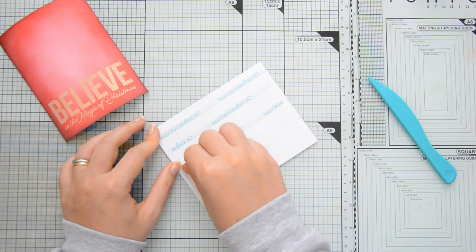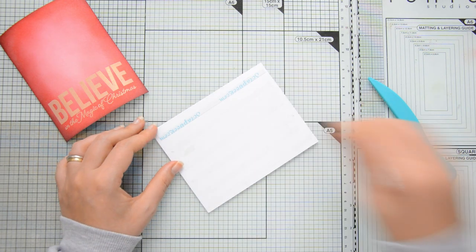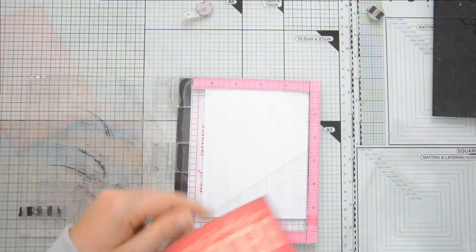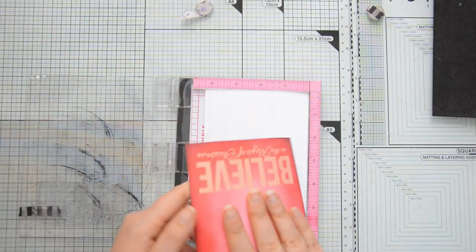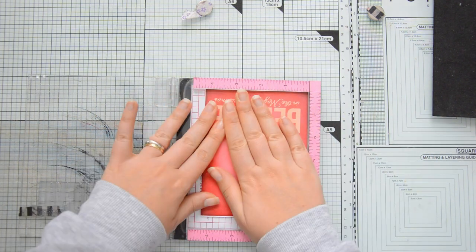I did run it through my die cutting machine protecting it with some plain copy paper to flatten it out a little bit more but having this generous amount of double-sided adhesive would really ensure that the card front stays flat on my card base.